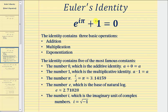The equation contains the number one, which is the multiplicative identity, which means if we take any number and multiply by one, we get the same number.